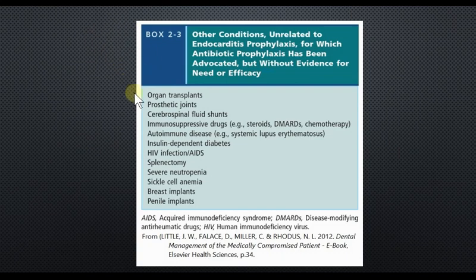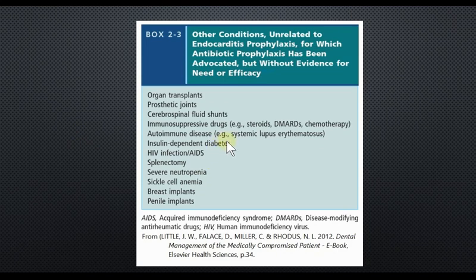There are other indications for antibiotic prophylaxis beyond infective endocarditis prevention. These include patients with sickle cell anemia, insulin-dependent diabetes, prosthetic joints, organ transplants, and autoimmune diseases. These patients may also be considered for prophylactic antibiotics.